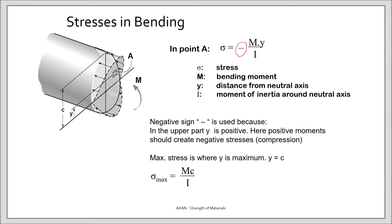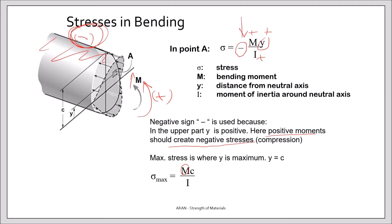Regarding the negative sign: we have defined that a moment which creates negative stresses in the upper surface is positive. So when I have a point A or some point in the upper half, my M is positive and my y (or c) is positive — a positive value. In this case, in the upper half, negative stresses should develop. A positive moment should create negative stresses, which is why we put a negative sign.